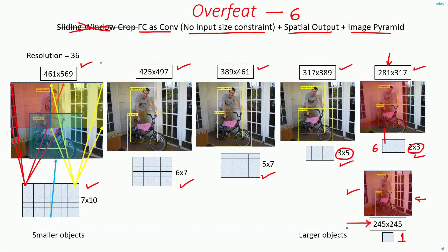And finally, in the same way, at the maximum dimension, you will get a spatial output of size 7 by 10, and you will be able to detect up to 70 different objects at different locations within the image.